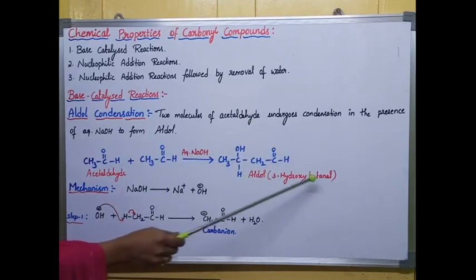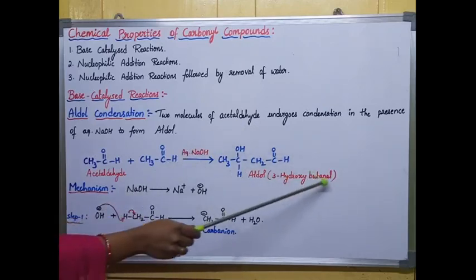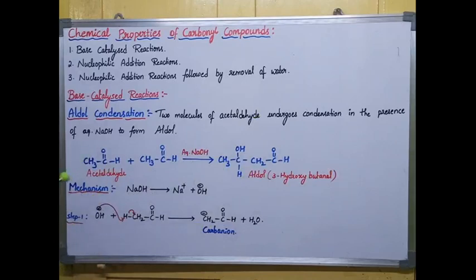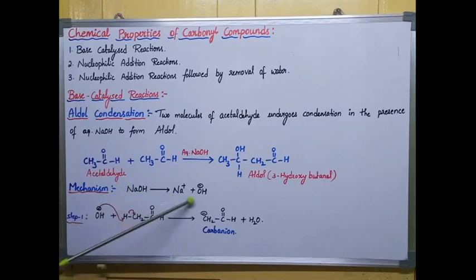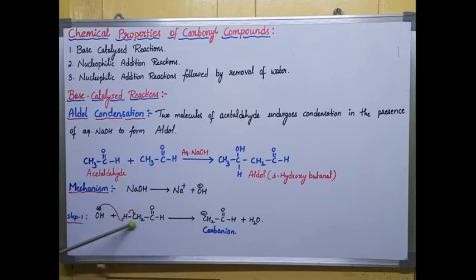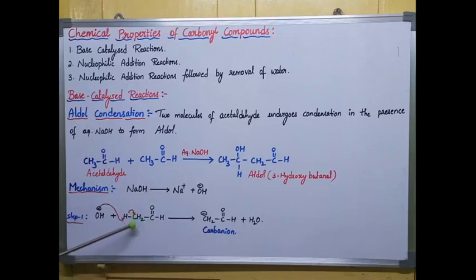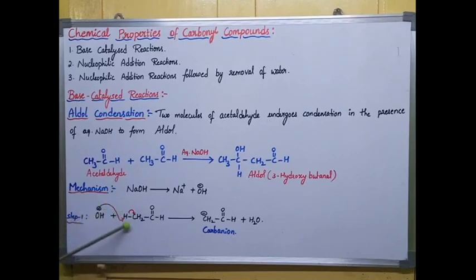This aldol is also called 3-hydroxybutanal. Now let's see the mechanism of the reaction. Firstly, sodium hydroxide dissociates into Na⁺ and OH⁻. When you add base to water it gives OH⁻ ions. In the first step, this OH⁻ ion abstracts a proton from the carbonyl compound — from acetaldehyde — specifically from the alpha carbon. The alpha carbon is the carbon present beside the functional group; here CHO is the functional group and CH₃ is the alpha carbon.